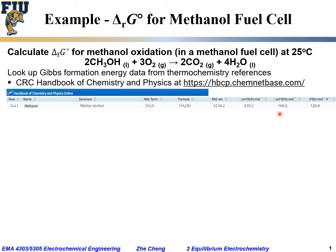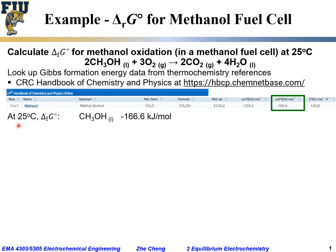The standard Gibbs formation energy for methanol liquid at 25°C is minus 166.6 kJ/mol. This means for one mole of methanol forming from the standard elements — carbon graphite, hydrogen gas, and oxygen gas — the free energy change from all those pure elements in their standard state to liquid methanol would be minus 166.6 kJ/mol. That's a very large negative number.